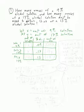To fill in the amount of alcohol column, we multiply the first two columns together. x times 0.09 is 0.09x, y times 0.17 is 0.17y, and 12 times 0.15 is 1.8.